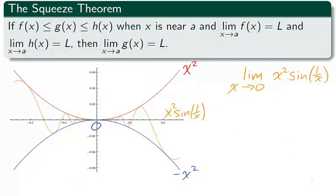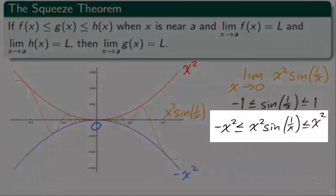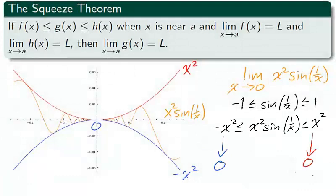This graph actually depicts the squeeze theorem on x squared sine 1 over x as x approaches 0. As sine is a function naturally bounded by 1 and negative 1, we can take the natural bound of sine by 1 and negative 1 and multiply it by x squared. What we have is three functions. X squared on top of x squared sine 1 over x on top of negative x squared. As x squared and negative x squared go to 0 as x approaches 0, the middle function is squeezed towards 0.